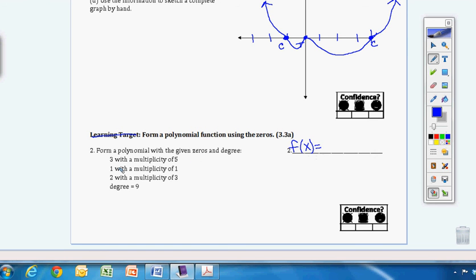So we'll start with our function. And we'll start with if our x value equals three, as we put it into a factor, it's x minus three. And if the multiplicity is five, then it's going to be raised to the fifth power to show it's got a degree of five. And then we have one, x equals one. So as a factor, we have x minus one with a multiplicity of one. So I don't even have to put an exponent. And then we have x equals two. So as a factor, x minus two.